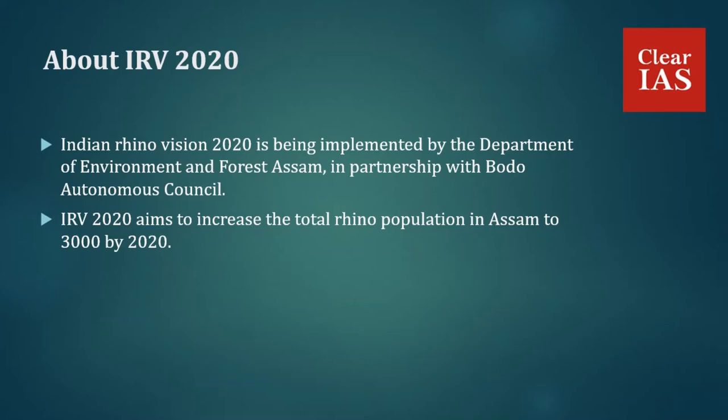The program aims to increase the total rhino population in Assam to 3000 by 2020. The population is to be distributed across at least seven protected areas in order to provide a long-term sustainable population of the one-horned Indian rhino species.